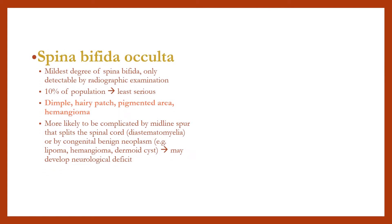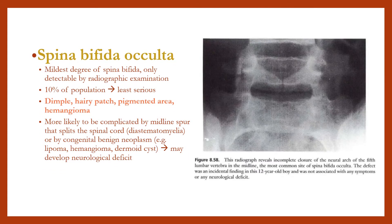Spina bifida occulta is the mildest degree, occurring in approximately 10% of the population. Characteristics include a tuft of hair, pigmented area, and hemangioma. It is more likely to be complicated by a midline spur that splits the spinal cord, and may develop neurological deficit.